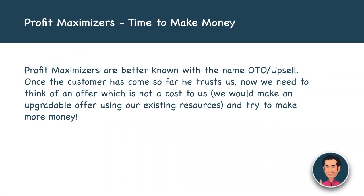The next thing is profit maximizers, also known as OTOs — one-time offers — or upsells. Once the customer has come this far, that means he really trusts you, which is why he paid for the core product. Now we need to think of an offer that is not a big cost to us but can be made into an upgradable offer for existing customers using our existing resources. When these are sold, you actually make a lot of money.